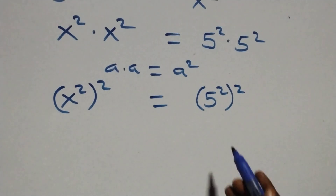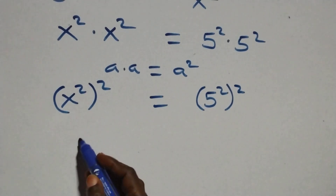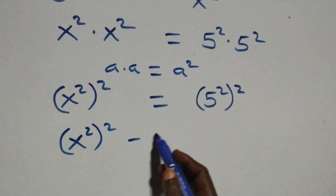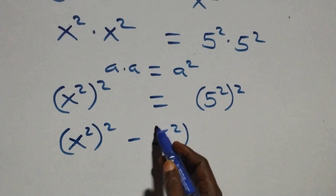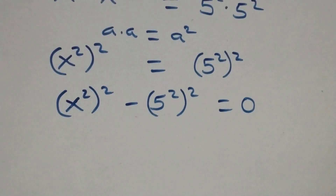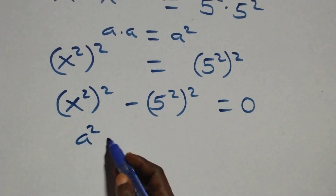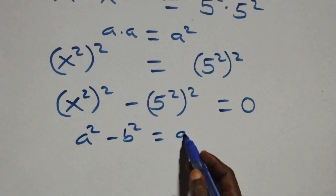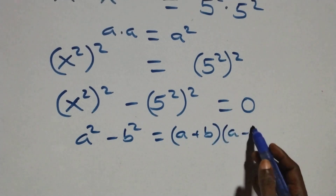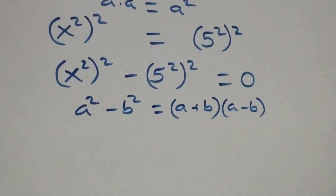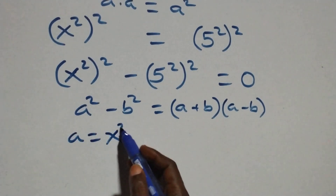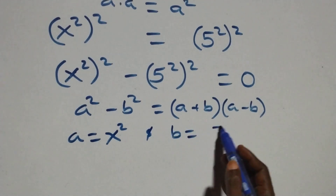From here we take the right hand side to the left hand side, and this becomes x squared to the power of 2 minus 5 squared to the power of 2 equals zero. This follows when we have a squared minus b squared, which is the same thing as (a + b)(a - b), where a stands as x squared and b stands as 5 squared.